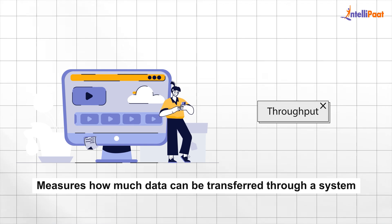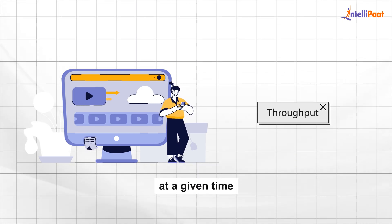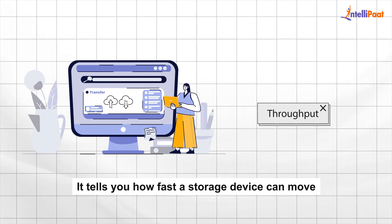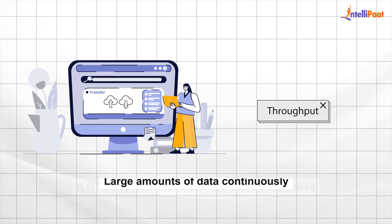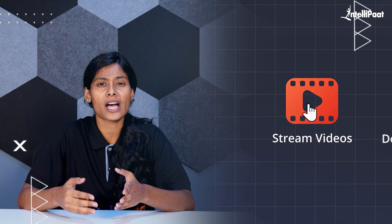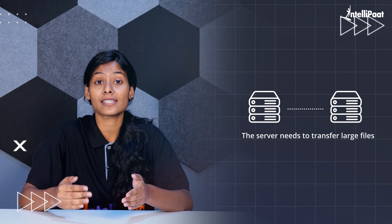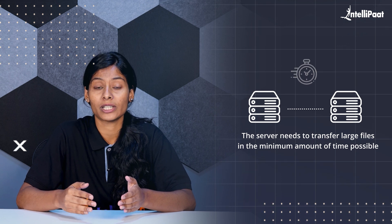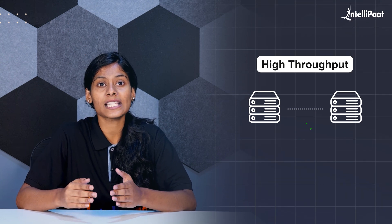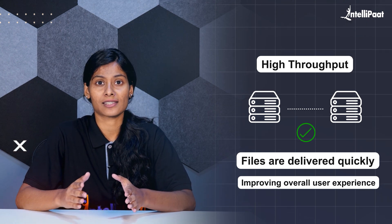Throughput, on the other hand, measures how much data can be transferred through a system at a given time. It tells you how fast a storage device can move large amounts of data continuously. For example, when viewing images, streaming videos or downloading content, the server needs to transfer large files quickly. High throughput ensures these files are delivered quickly, improving overall user experience.